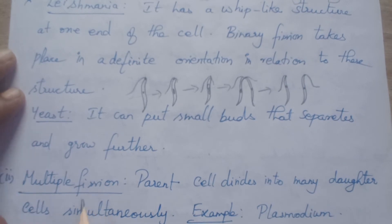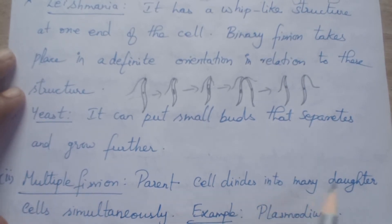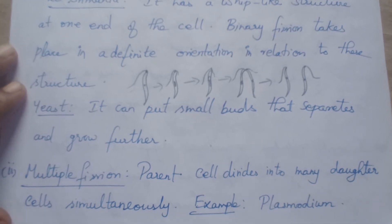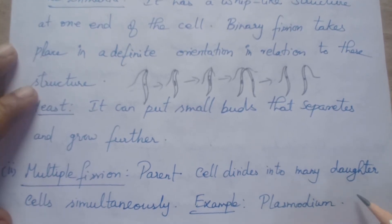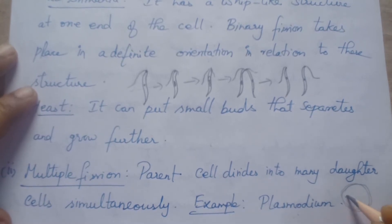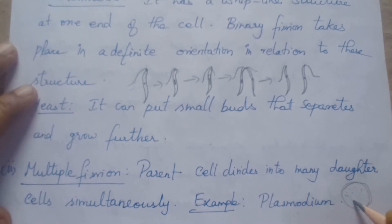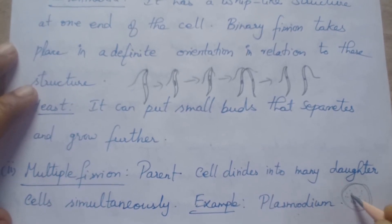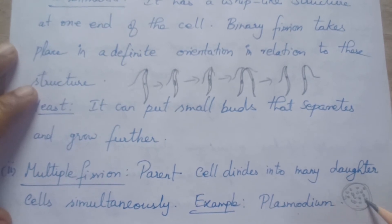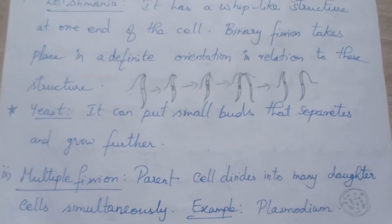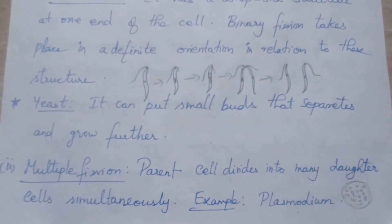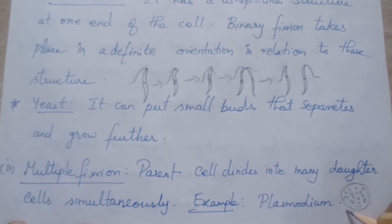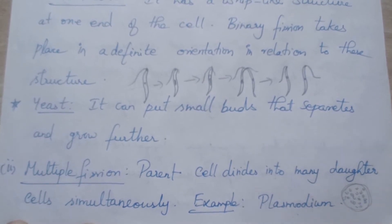Multiple fission means the parent will divide into many daughter cells simultaneously. It will give rise to many new cells at once. In the textbook they show plasmodium, the malarial parasite — it gives rise to many, many daughter cells, each with a nucleus. It does not take one gap between producing daughter cells; simultaneously it will produce more and more. The example is plasmodium.